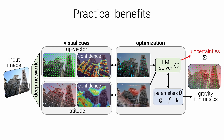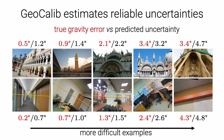Relying on classical optimization also has multiple practical benefits over black-box neural networks. First, the least-squares optimization can estimate uncertainties for the calibration parameters as a covariance matrix. This uncertainty can flag examples for which the estimate is likely wrong, for example due to poor geometric constraints in the optimization, or to low-confident visual cues such as when there is motion blur or no texture. This makes GeoCalib more interpretable. Here we sort a few examples by increasing gravity uncertainty from left to right, and we report the ground-truth error in red. The uncertainty, shown in black, correlates very well with it.